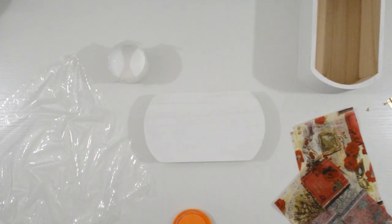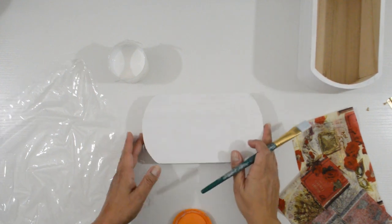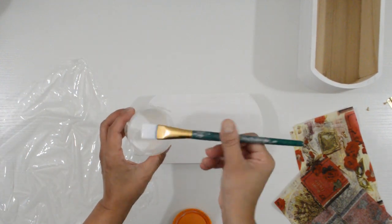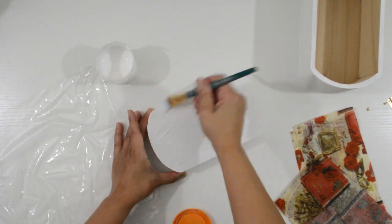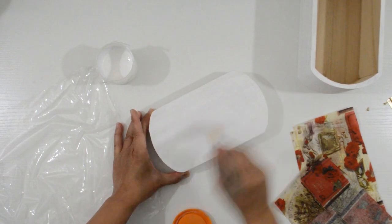Now it's ready to be decoupaged. I start with the top and brush on a nice even coat of Mod Podge. Work at a swift pace. You don't want the glue to dry and make sure to get those edges.